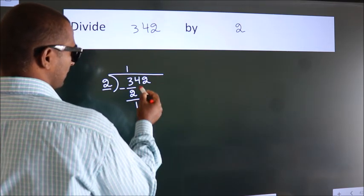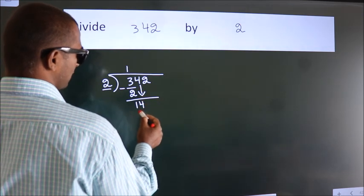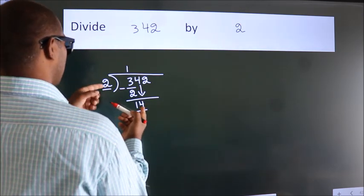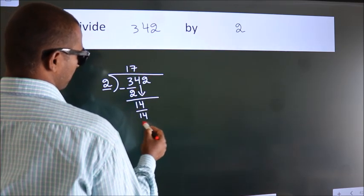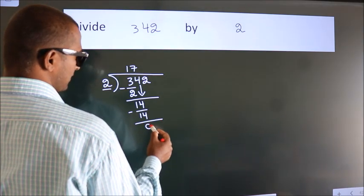After this, bring down the beside number. So, 4 down. So, 14. When do we get 14? In 2 table. 2 7s 14. Now, we subtract. We get 0.